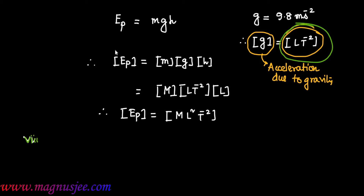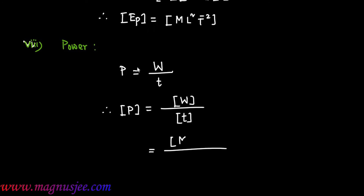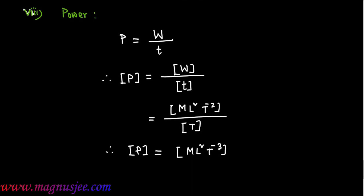Number 8: Power. Power is the rate of doing work: P equals W divided by t, where W is the work done and t is the time. Therefore, dimension of P equals dimension of W divided by dimension of t, which equals M L squared T to the power minus 2 divided by T. Hence, dimensions of power P equal M L squared T to the power minus 3.